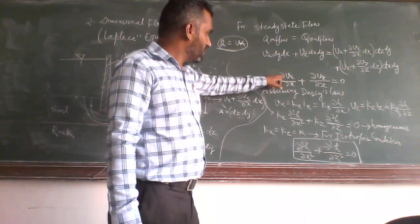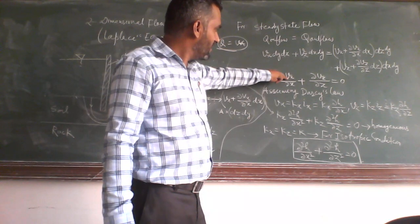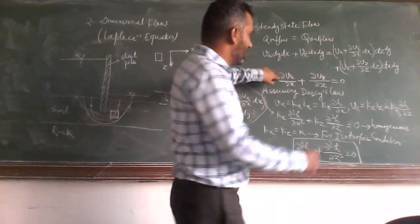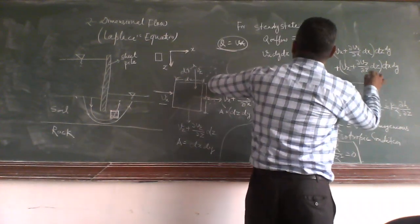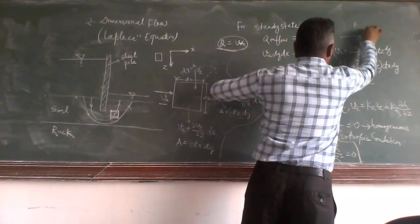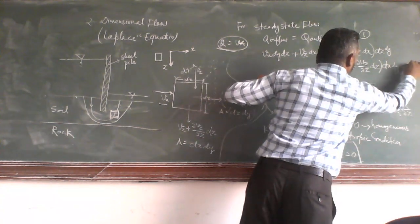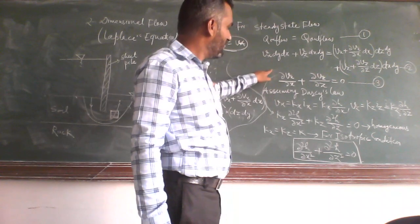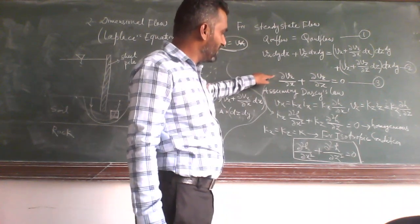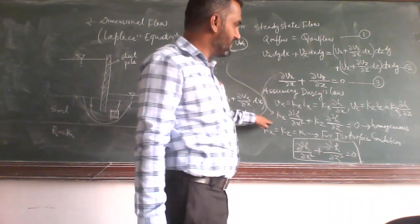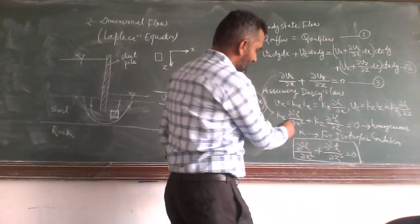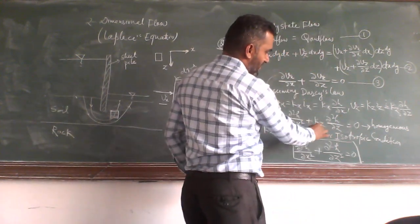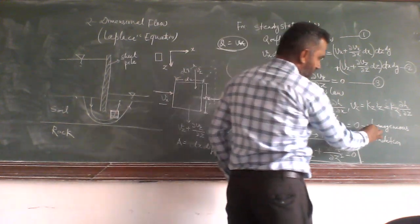If you put vx and vz from this equation to equation number, suppose this is equation number 1, this is equation number 2, and this is equation number 3. If you put the value of vx in equation number 3, then this equation will simplify further like this: kx del square h by delta x square plus kz del square h by delta z square equals 0.